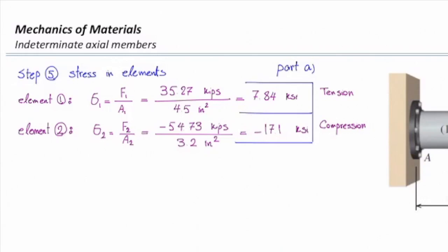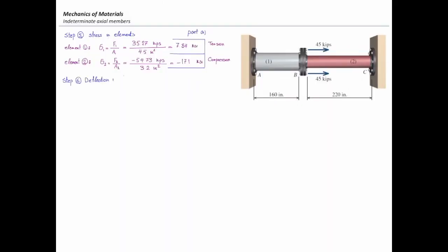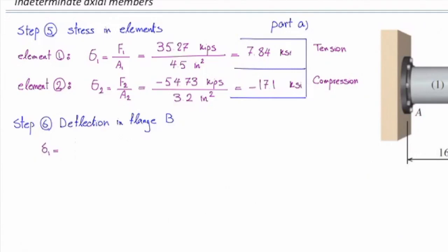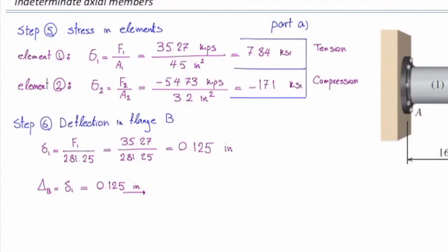That is the answer to part A. For part B, we determine the deflection or movement of flange B. What connects flange B to point A is element one, so the movement of the flange equals the change in length of element one — which also equals the change in length of element two. Using delta one equals F1 divided by 281.25 and plugging in F1 gives 0.125 inches. The positive sign means extension, so flange B moves 0.125 inches to the right, following the direction of the applied force.